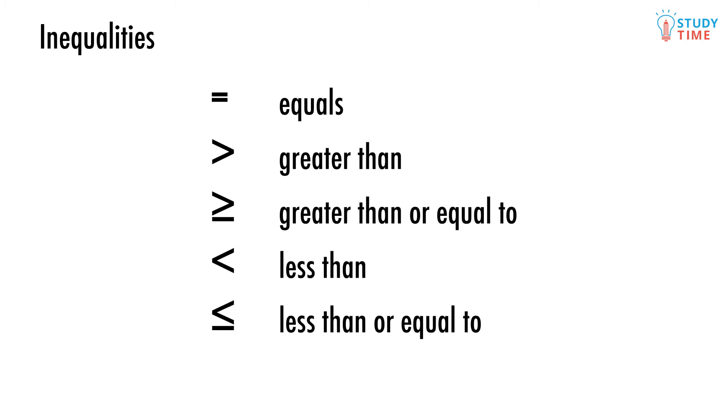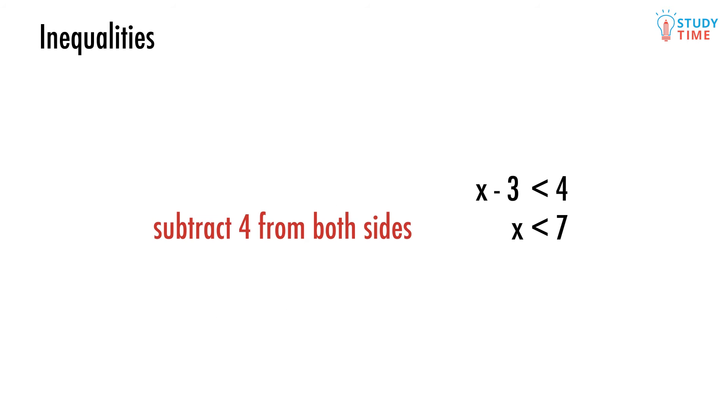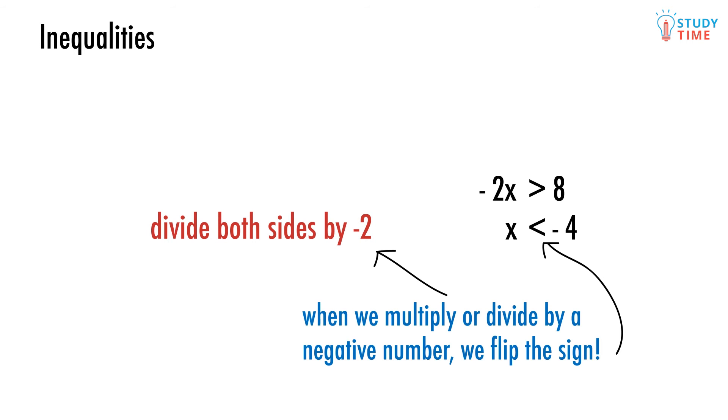These symbols sit in the same spot as an equal sign. Solving inequalities is much the same as solving equalities. We still try to get our unknown such as x over to the left-hand side and everything else on the right. We can add or subtract from both sides. We can multiply or divide both sides by a positive number.